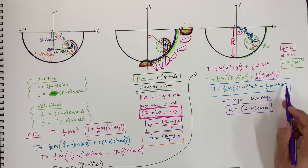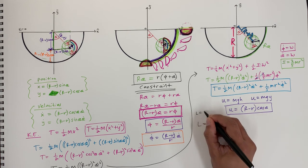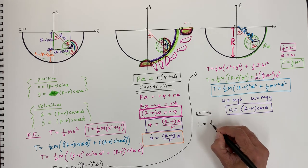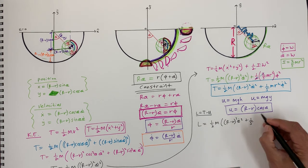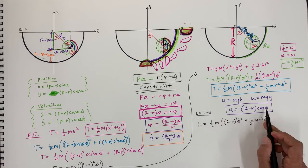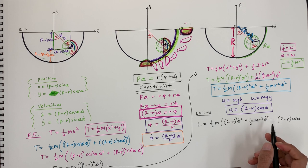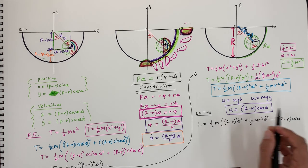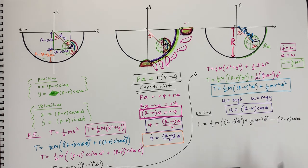Now let's write down the Lagrangian. The Lagrangian is L equals T minus U. We have: L equals one half m (R minus little r) squared theta dot squared plus one fifth m r squared phi dot squared minus m g (big R minus little r) cosine theta. So this is the Lagrangian of the system.